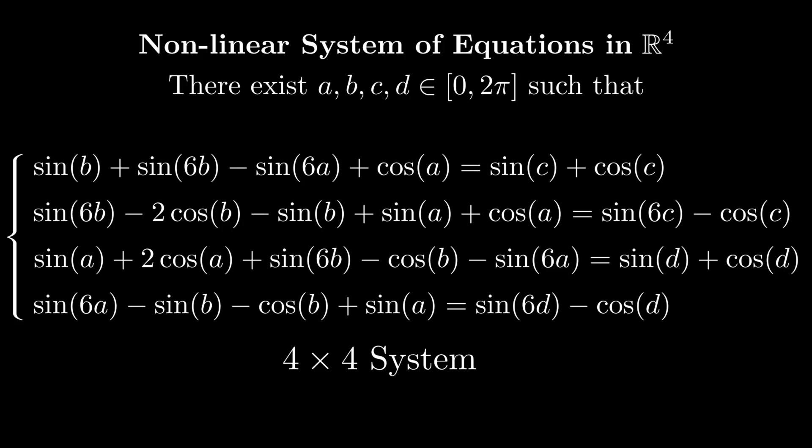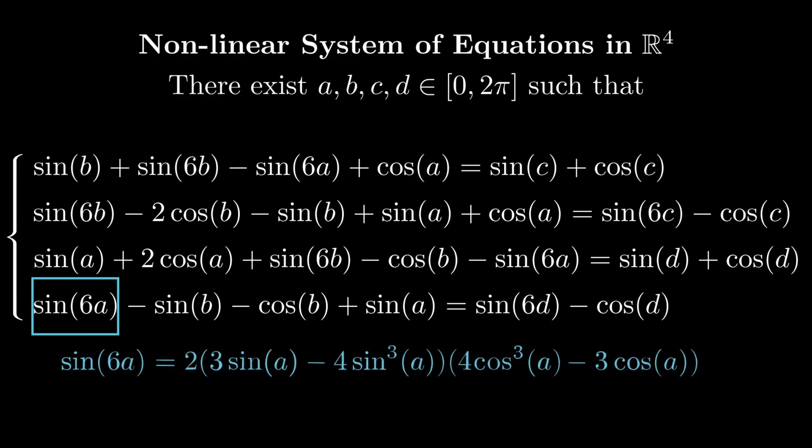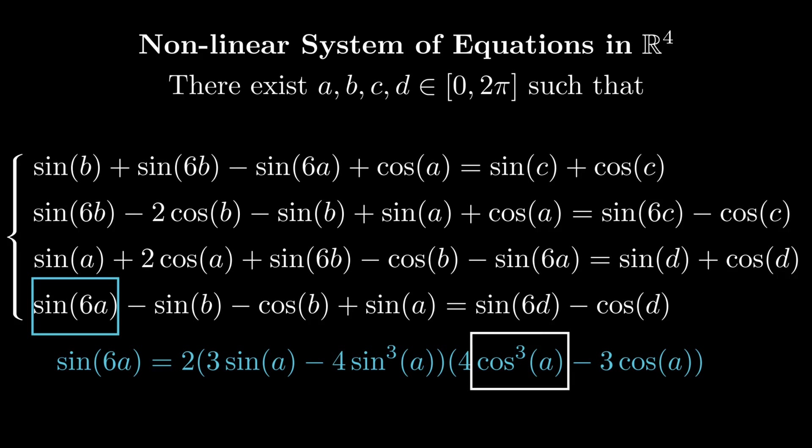Because of trig identities, we can expand sin of 6a into a polynomial in terms of sin a and cos a. However, cos a will be of degree 3, which is odd. So we cannot get the system completely in terms of the sin function using the identity sin squared plus cos squared equals 1, because at some point, we would have to take square roots.